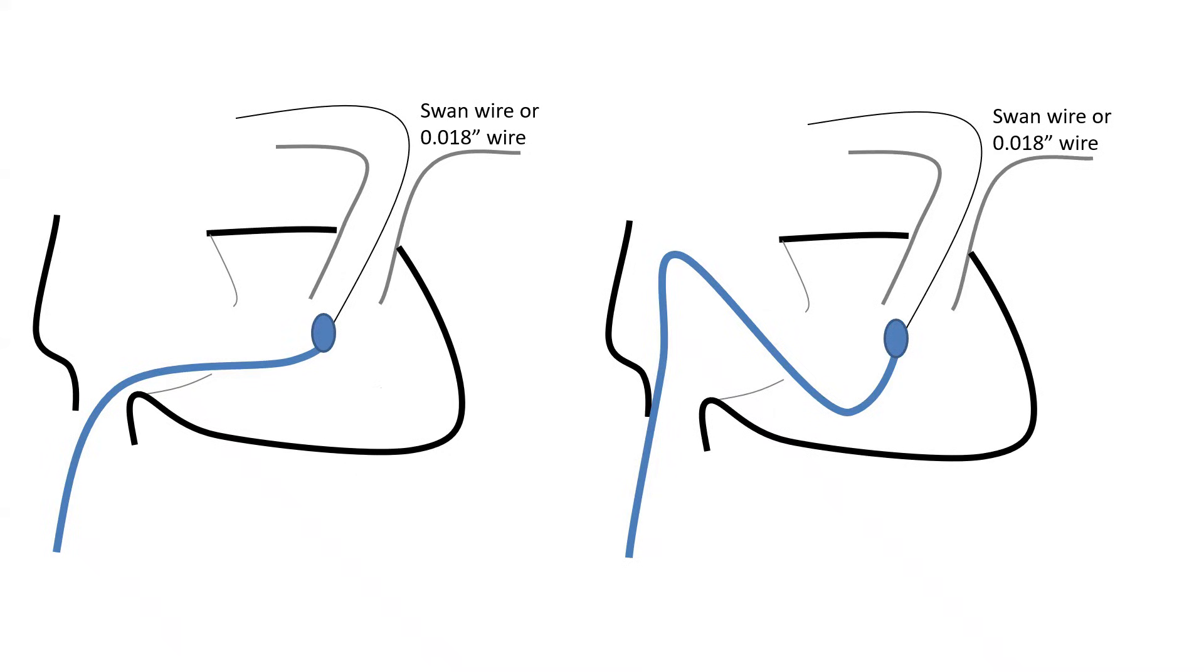And keep in mind, another problem with the Swan catheter is that it can only accommodate up to 0.025 inch wire. It cannot accommodate 0.035 inch heavily supportive wire.